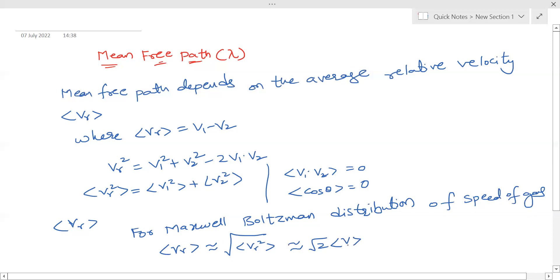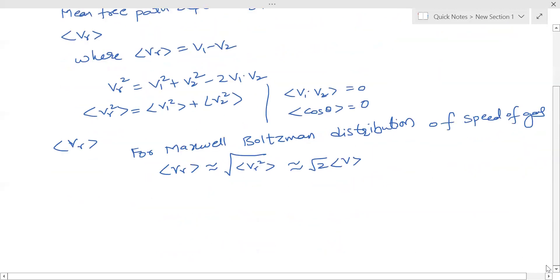So here v is nothing but the average velocity of gas molecules. So vr is relative velocity and this v is average velocity of all the molecules. When we calculate relative velocity at a particular instant, two molecules may have different velocity, but the overall velocity of all the molecules including those two molecules will be equal to this v.